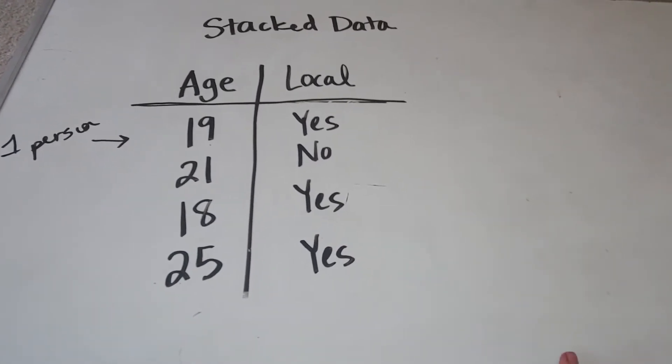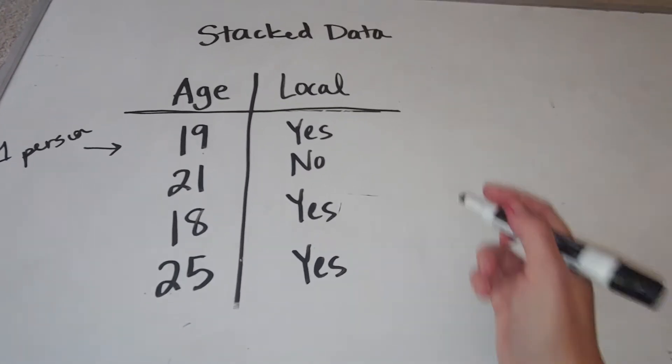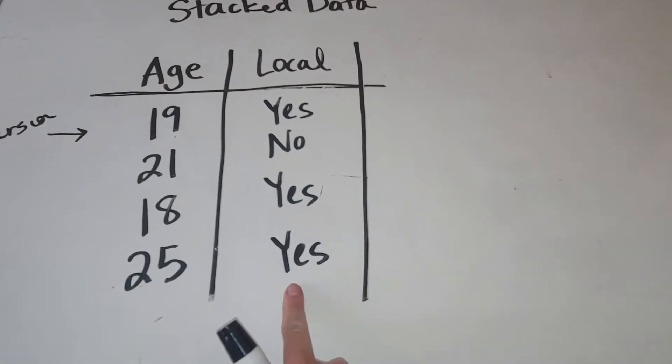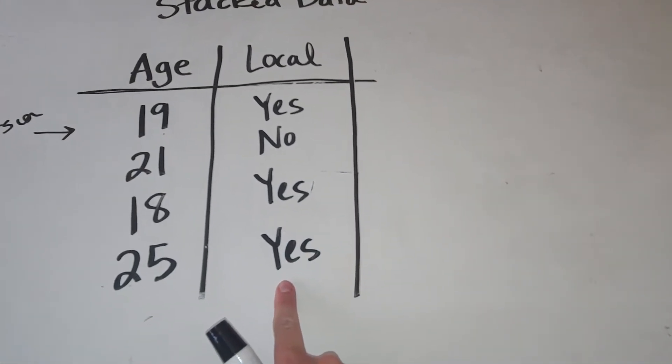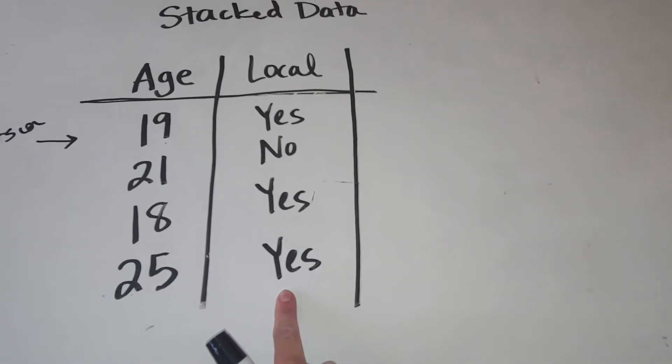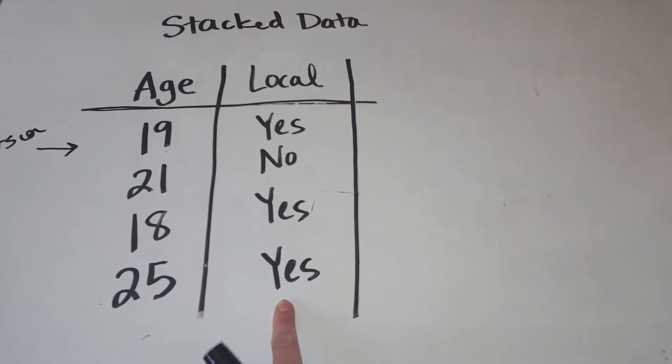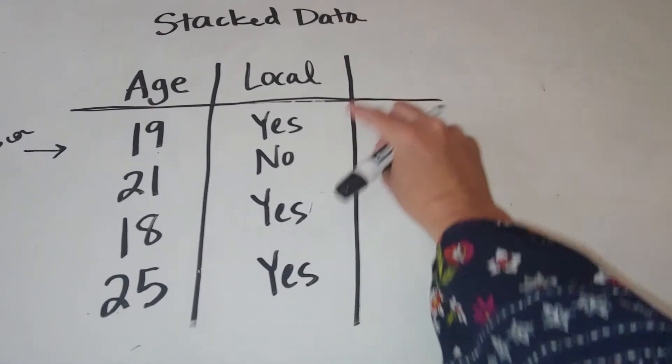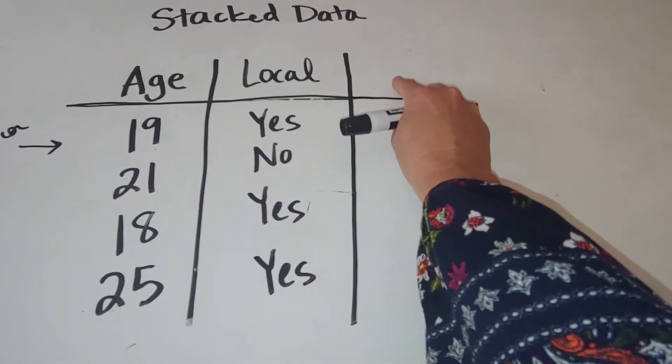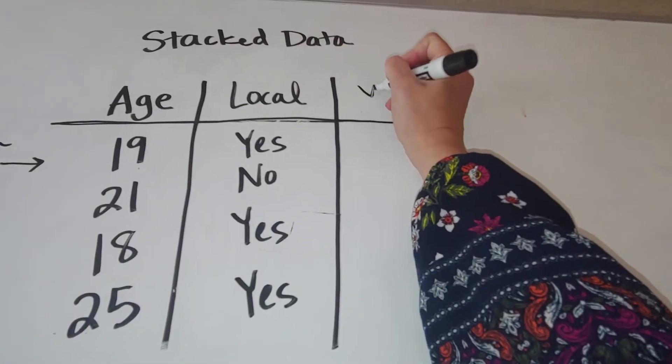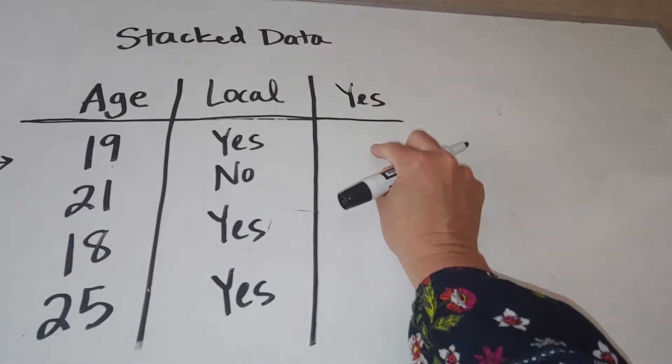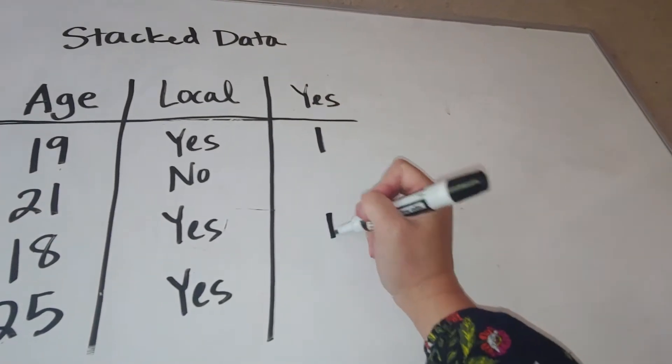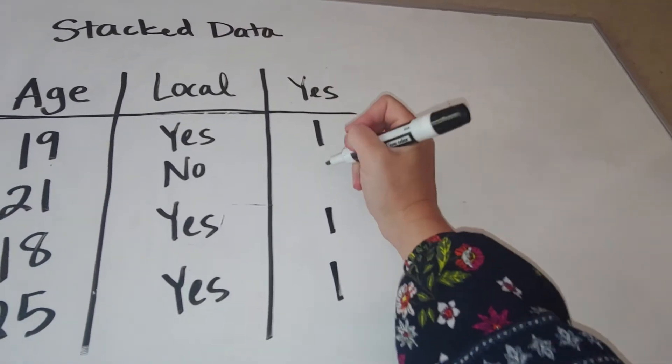Now, before I talked about unstacked data, we're going to talk about coding data. So how coding data works is basically you take a categorical variable - again, that's having words as answers - and you basically have the response be one of the responses. So I would title this either yes or I'd title this no. So if I title this yes, what that means is that everywhere we see a yes, we'd have a one, and everywhere I have a no, I'd put a zero.